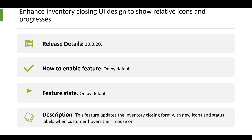The next feature is an enhancement of the UI design of the inventory closing form by adding new icons and status labels to the form. Starting from App 10.0.20, this feature will be on by default — no need to enable it from the feature management workspace.